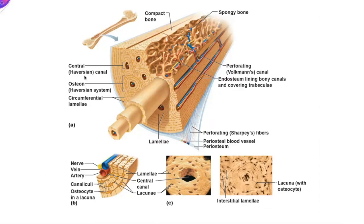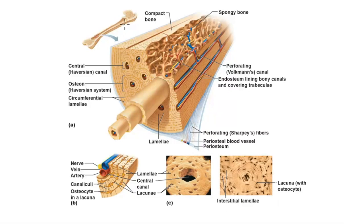Now let's take a closer look at the microscopic anatomy of compact and spongy bone using a diagram from the textbook Human Anatomy and Physiology by Elaine Marieb and Katja Hoehn. In this diagram you can see that compact bone is concentrated toward the outer edges near the periosteum, whereas spongy bone is near the medullary canal and inside the epiphysis.